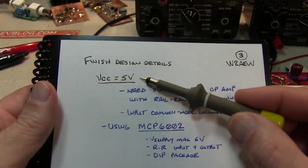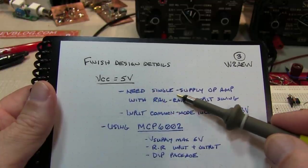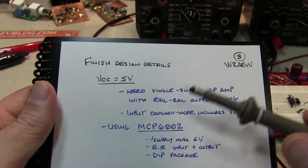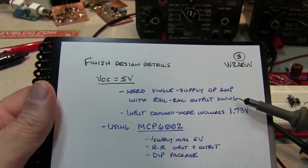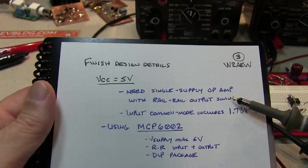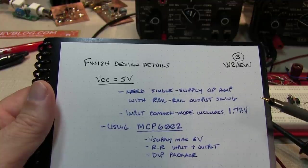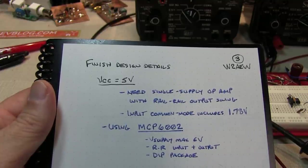Here's a couple more design details. My friend wanted a single 5 volt supply, so that dictates the need for a single supply op amp. The output needs to go from 0 to 5 volts, which means that we need rail-to-rail output swing. That's another reason why we picked relatively large values for R1 and R2, so that we're not asking the output to push a lot of current. That makes it easier to reach the supply rails. The input voltage range has to include 1.78 volts, so not a problem there.